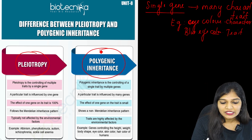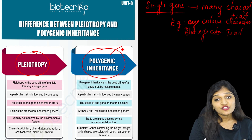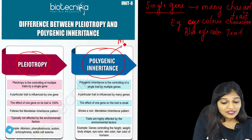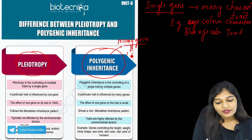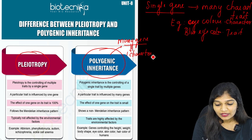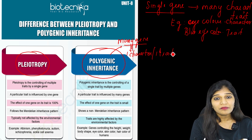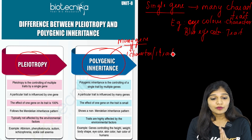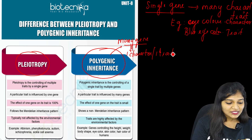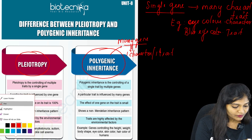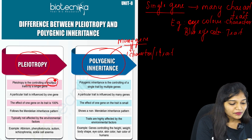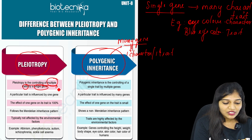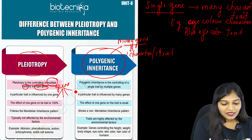And what about polygenic inheritance? Poly means many, genic means many genes. So the name gives us an idea: many genes controlling one character or one trait. That is the major difference between pleiotropy and polygenic inheritance. Pleiotropy is the controlling of multiple traits by a single gene — one gene controls many, many characters or traits.